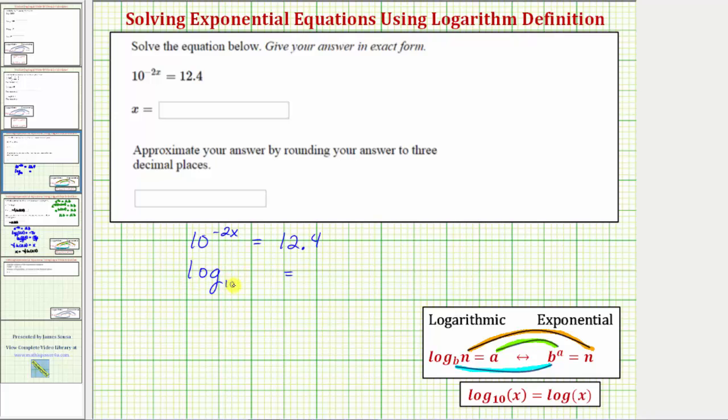We can actually leave the base of 10 off in the next step, because if no base is given, it is base 10. Next, a logarithm is an exponent, and therefore the logarithm is equal to negative 2x. Notice the exponent is a here, and the logarithm is equal to a in the log equation.